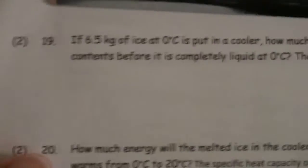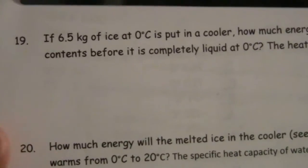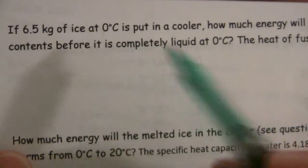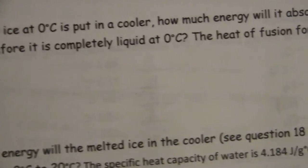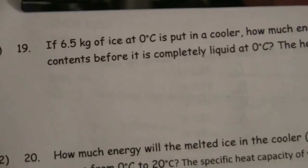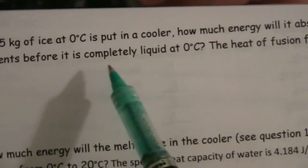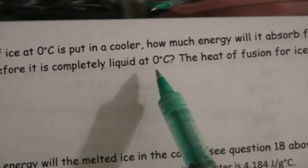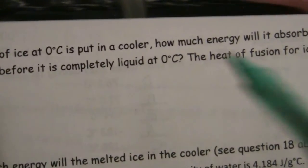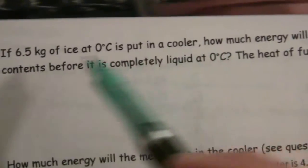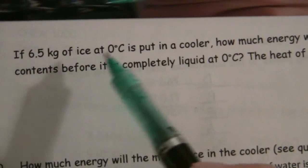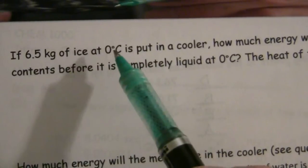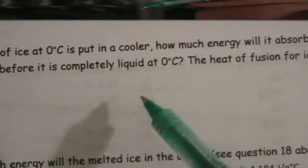Problem 19: if 6.5 kilograms of ice at zero degrees is put in a cooler, how much energy will it absorb from the contents, that is the food, before it is completely liquid at zero degrees. So you're going camping, you get a cooler, you put some ice in it, and we're going to say that ice is at its freezing point. 6.5 kilograms of it.